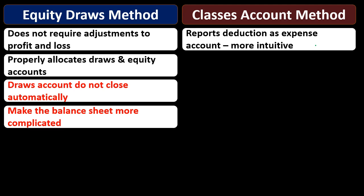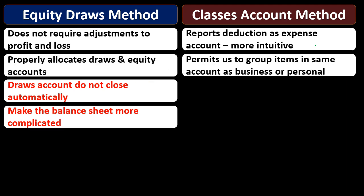With the classes method, we record items as a type of expense and then change the class they're recorded into. This permits us to group items in the same account as either business or personal. We can have one account where items are assigned to the business side or personal side. So if an account has both business and personal payments, we can use classes to break up those payments.